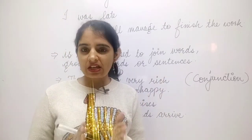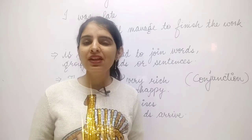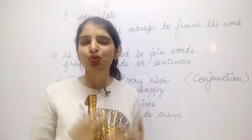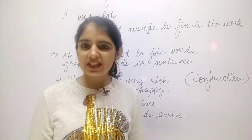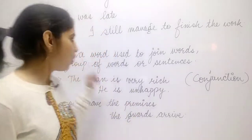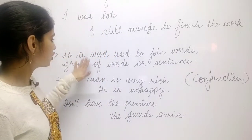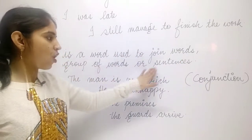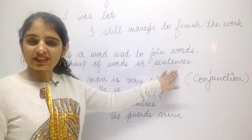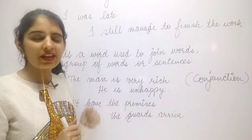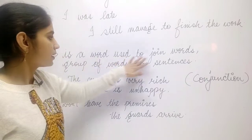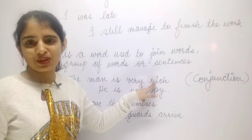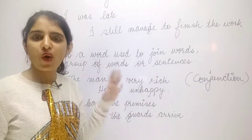Conjunction means 'join karna' — to join. In grammar, what can we join? We can join words, two words, two sentences, two clauses. So this is the definition of conjunction: a conjunction is a word used to join words, group of words, or sentences.